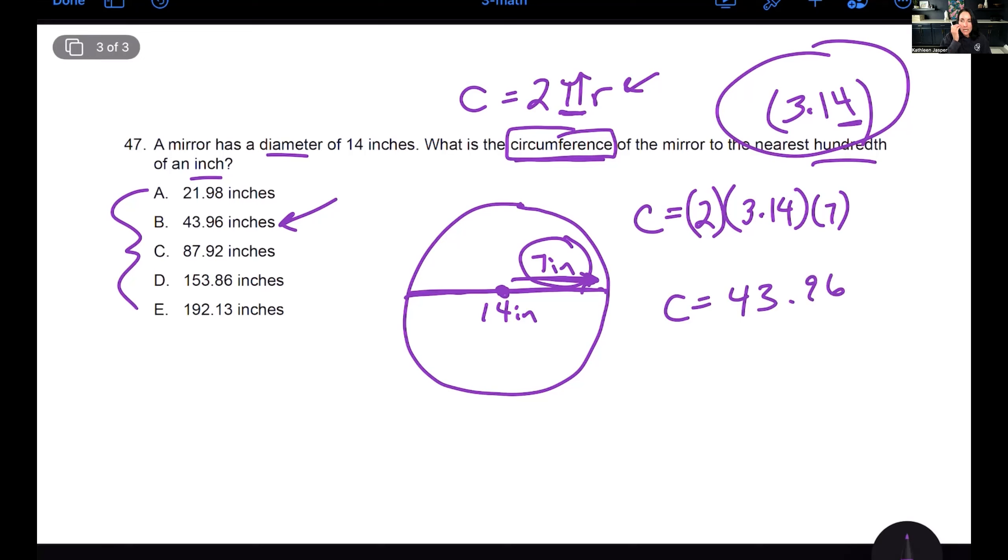We can just put them all in parentheses here to keep them organized. So now we have multiplication on the right-hand side. Let's just multiply the two by 3.14 and we get 6.28 and then multiply it again by seven. And we get C equals 43.96. Now let's say we just want to kind of do this quickly and we don't want to be bogged down with the calculator. Let's multiply 3 by 14. And what do I approximately get here? I get approximately 42. Well, that eliminates A, that eliminates C, D is way too big and E is way too big, which leaves me with 43.96 inches.